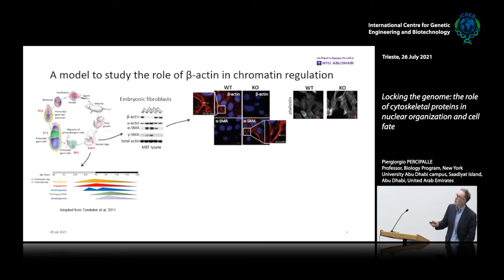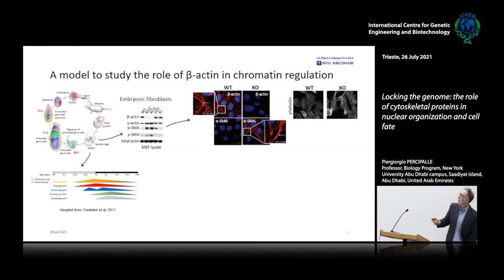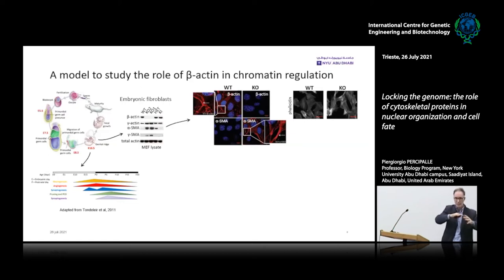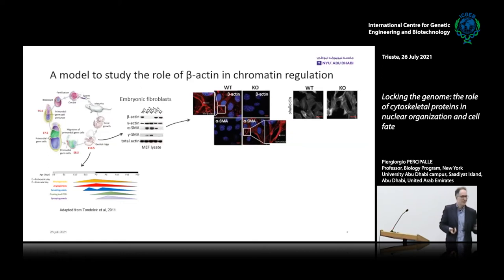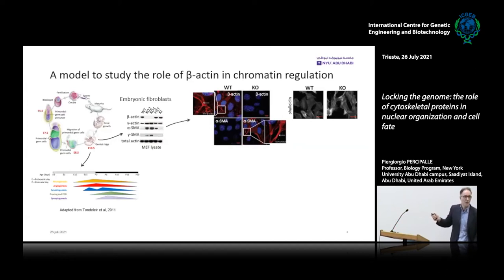We also have a heterozygous condition where only one allele is disrupted. Interestingly, regardless of the increment in other actin isoforms, the total level of actin is more or less the same — the cell manages some kind of compensation. The cytoplasmic cytoskeleton is actually fine because you have alpha-smooth muscle actin, you can stain with phalloidin, and we can maintain and propagate these cells.